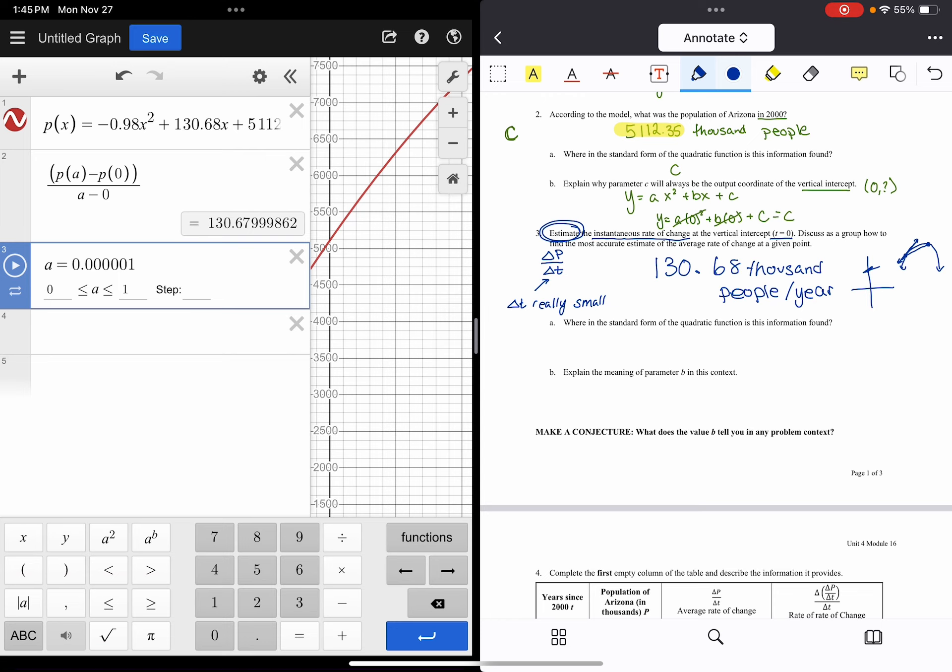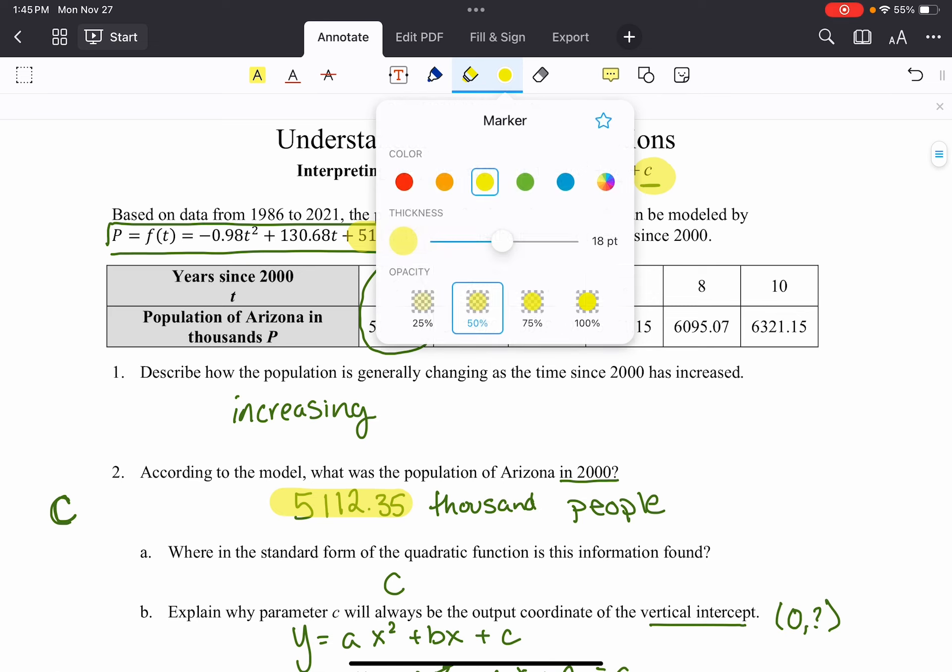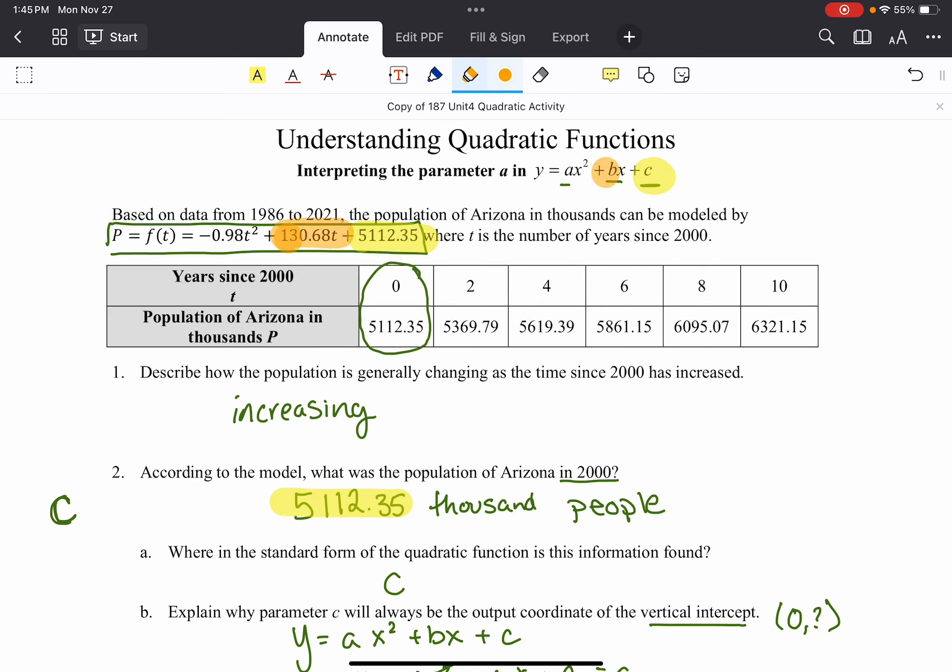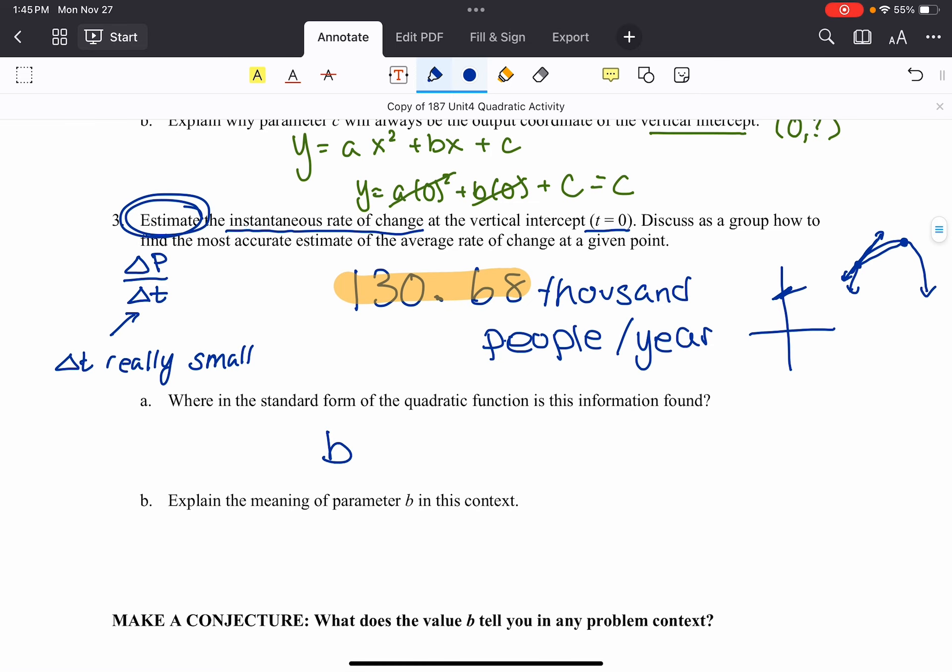Now if I go back up to my quadratic function up top and let's close that out, you should notice, I'm going to switch colors here. That shows up right here. That's my b value. So this number that we found, that instantaneous rate of change, is the b term of our quadratic function. And so what is the meaning of that parameter? Well, it's what we found here. It's the instantaneous rate of change at the input value when the input value is zero. So in this particular situation, it is how quickly the population of Arizona was increasing in the year 2000, exactly when it started.